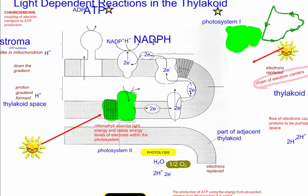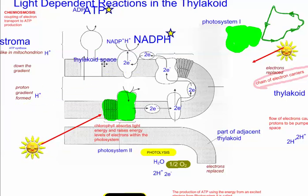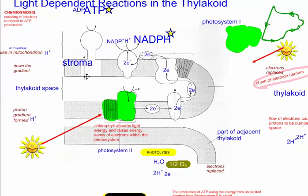NADPH is a big, important molecule — it's going to be a hydrogen donator. So we're going to give it a star, because this is one of the main products of the light-dependent reactions in the thylakoid. Inside the thylakoid is the thylakoid space, and outside is the stroma.